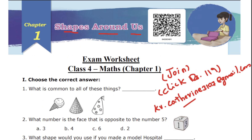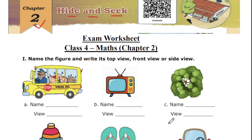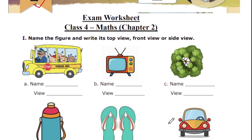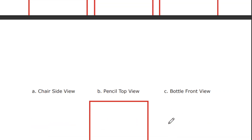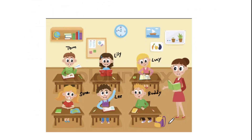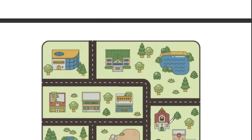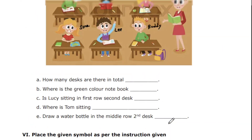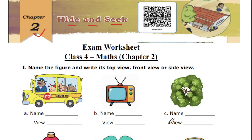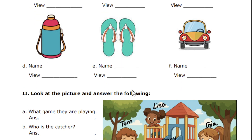Now we are going to the second chapter, Hide and Seek worksheet. This worksheet has six pages in total. We will go through them one by one. Let's go back to the lesson and have a small recap before we start the worksheet.